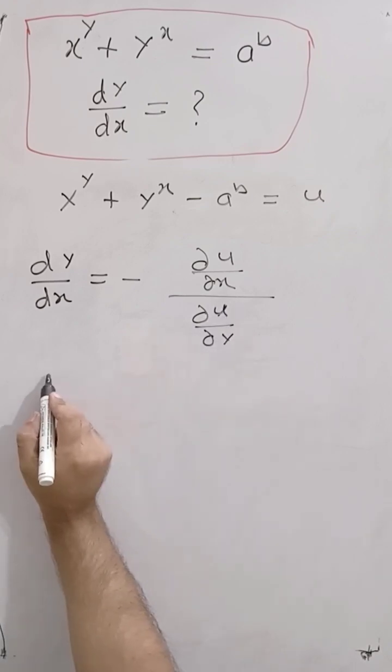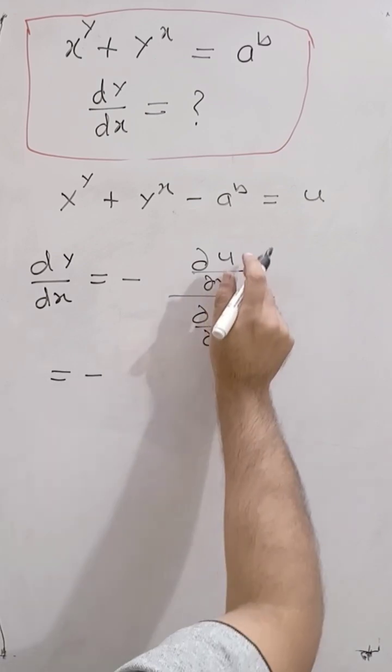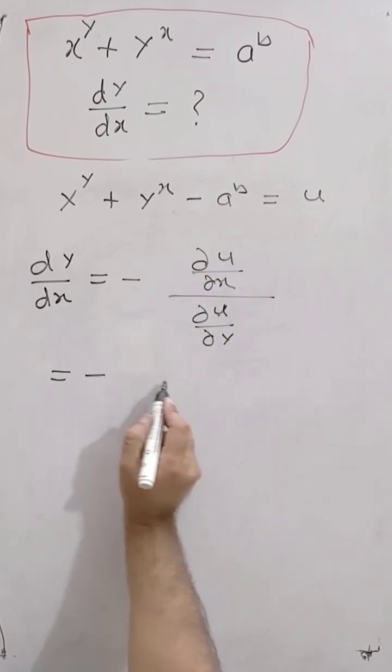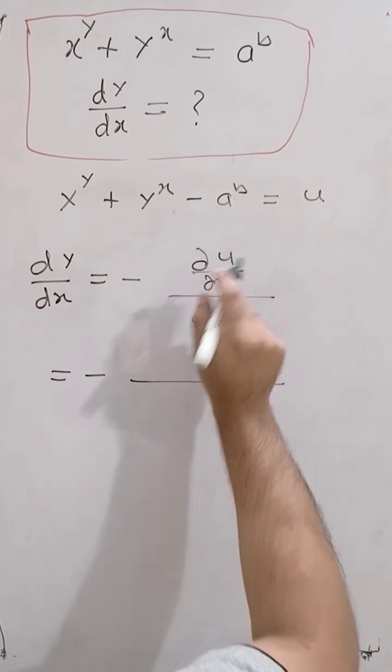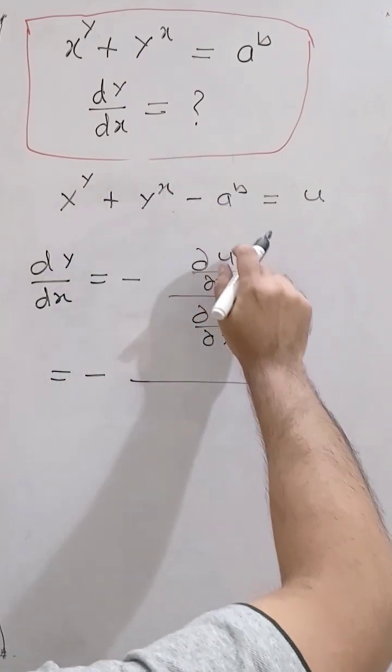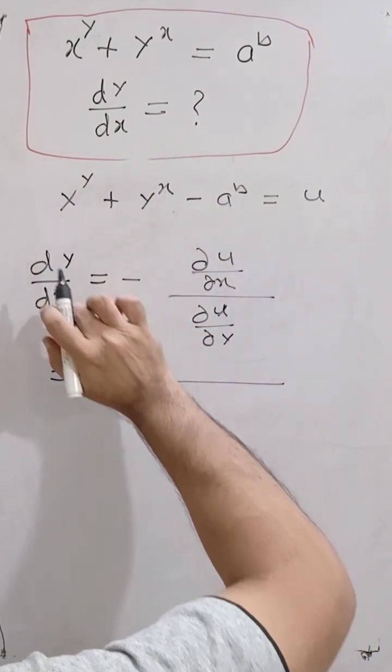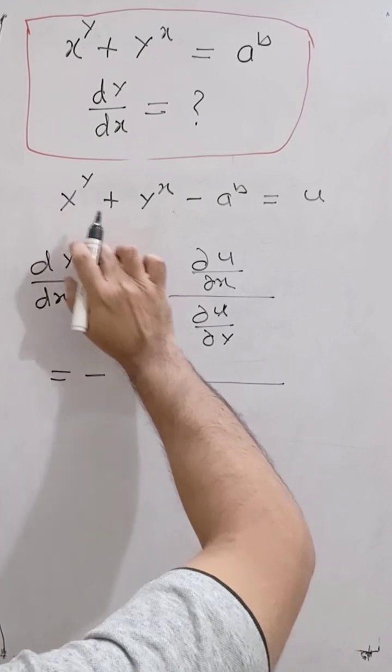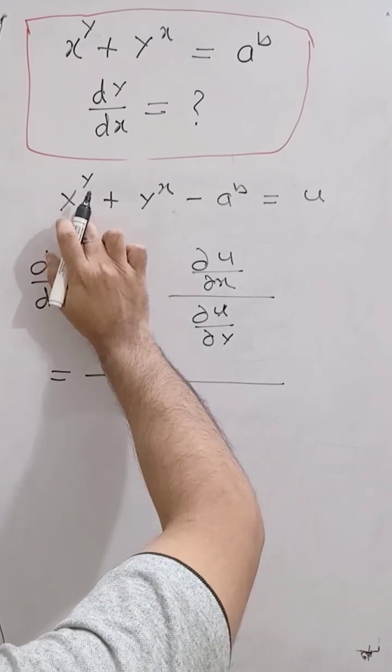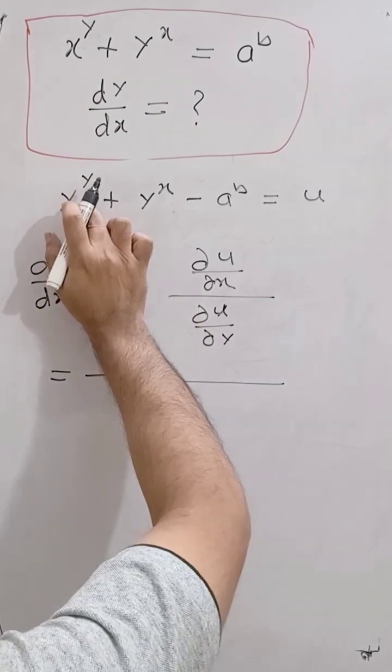Here, make the differentiation. Del is the partial differentiation. At first, del u upon del x means suppose y is constant and take the differentiation with respect to x. Take y as constant.